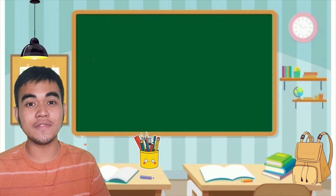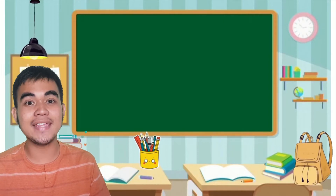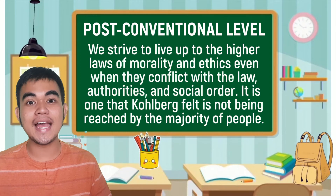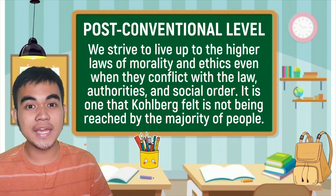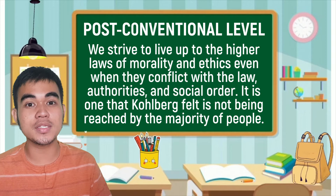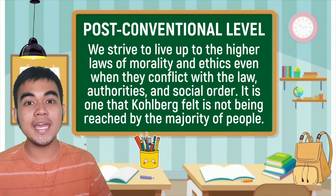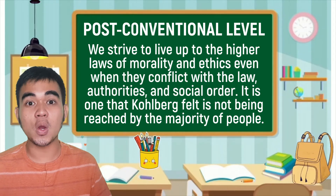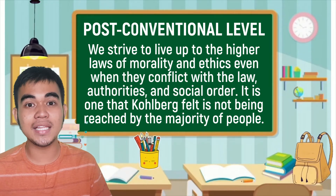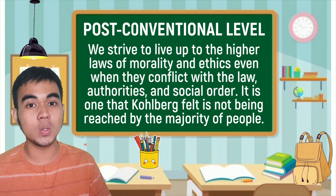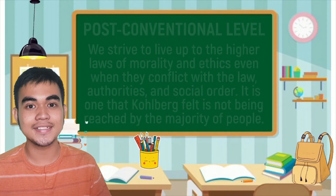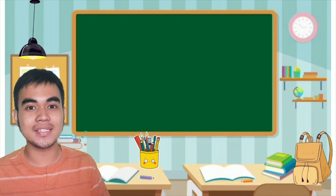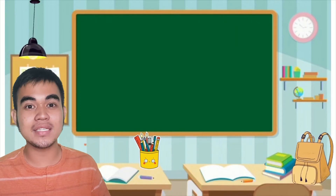After the conventional level follows the third and last level, which is the post-conventional level. At this level, we strive to live up to the higher laws of morality and ethics, even when they conflict with the law, authority, and social order. According to Kohlberg, it is the level that the majority of adults fail to reach. Under the post-conventional level are the two last stages: stage 5 and stage 6.